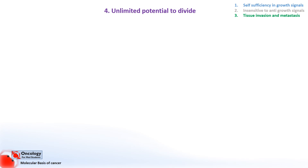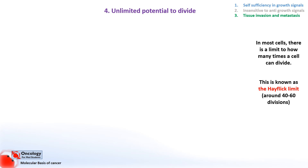Next is unlimited potential to divide. In most cells there's a limit to how many times the cell can divide. This is known as the Hayflick limit and is somewhere between 40 and 60 divisions for most cells. This is because every time a cell copies its DNA it loses a small amount of its DNA due to the way it's copied.